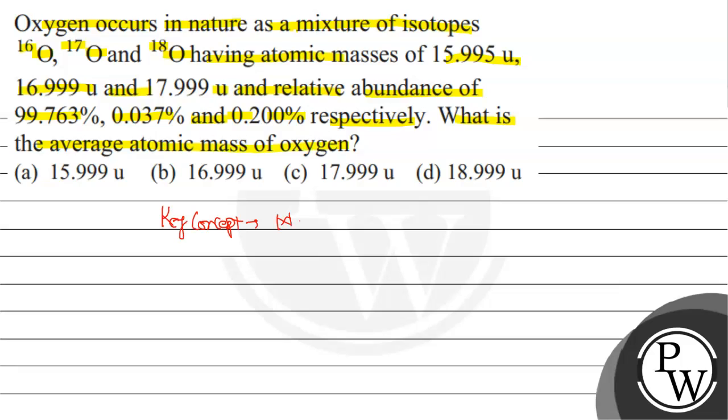Key concept. Average atomic mass means M average equal M1P1 plus M2P2 plus M3P3 divided by P1 plus P2 plus P3.